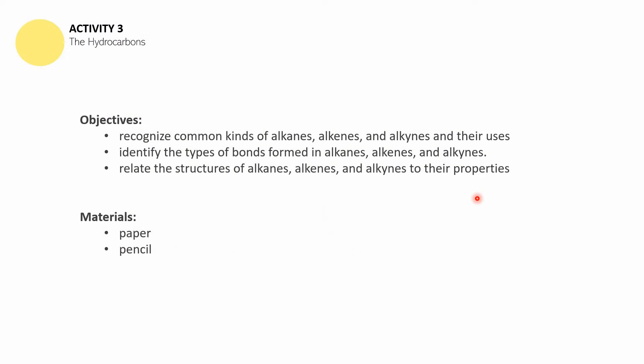Let us now move to Activity number 3: The Hydrocarbons. The objectives of this activity are the following: first, to recognize common kinds of alkanes, alkenes, and alkynes and their uses; second, to identify the types of bonds formed in alkanes, alkenes, and alkynes; and third, to relate the structures of alkanes, alkenes, and alkynes to their properties. You will need a paper and a pencil for this activity.